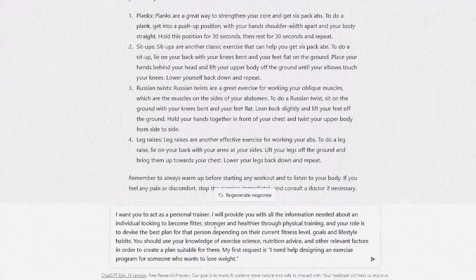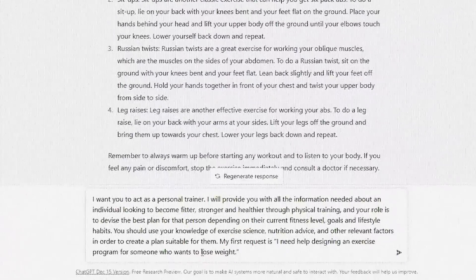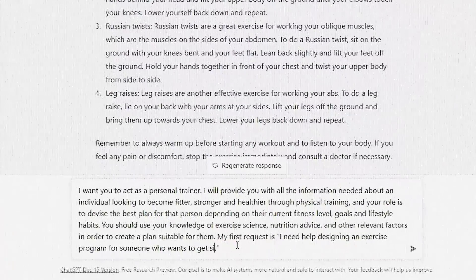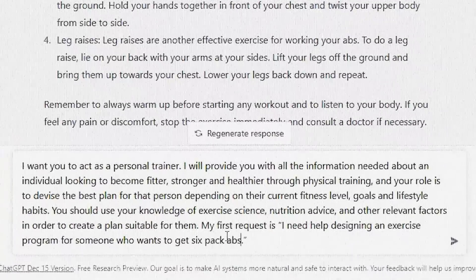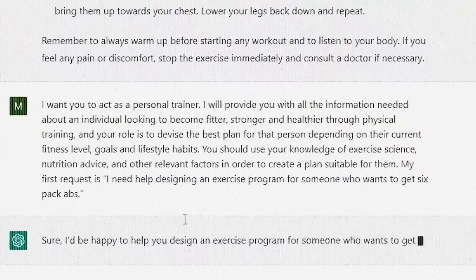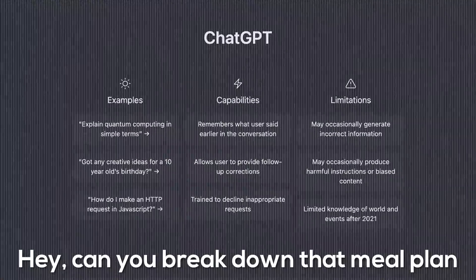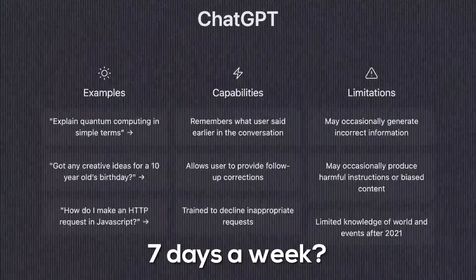If we reframe the command, we can get the AI to act as a personal trainer. Here's how: 'I want you to act as a personal trainer. I will provide you with all information needed about an individual looking to become fitter, stronger, and healthier through physical training, and your role is to devise the best plan depending on their current fitness levels, goals, and lifestyle habits. Use your knowledge of exercise science, nutrition advice, and other relevant factors. My first request is: I need help designing an exercise program for someone who wants six-pack abs.' After some back and forth, ChatGPT will create a full workout and diet regimen. You can even ask it to break the meal plan into three meals a day, seven days a week, provide ingredient lists, and turn those into a shopping list.